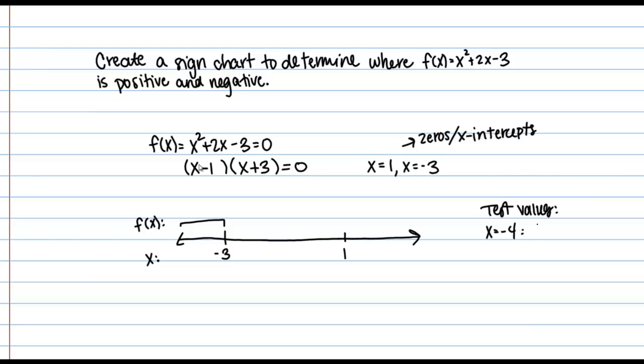Okay, so I'm going to plug in -4 to the factored version. So I have (-4 - 1) times (-4 + 3). Okay, I don't care what the actual value is. I only care about what the sign is. So it looks here that I have a negative times a negative. We're just going to give me a positive overall. So then what that tells me is that on this interval my function is positive.